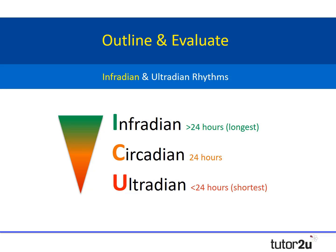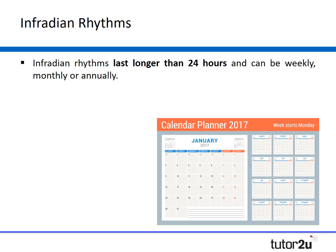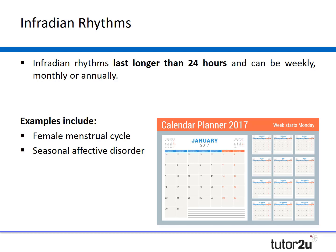Biological rhythms are cyclical patterns within biological systems — so humans — that have evolved in response to different environmental influences. An important biological rhythm is the infradian rhythm, which lasts longer than 24 hours and can be weekly, monthly, or even yearly. Examples include the female menstrual cycle, seasonal affective disorder, and hibernation in animals. Let's look at the first two human examples and see how they fit in.